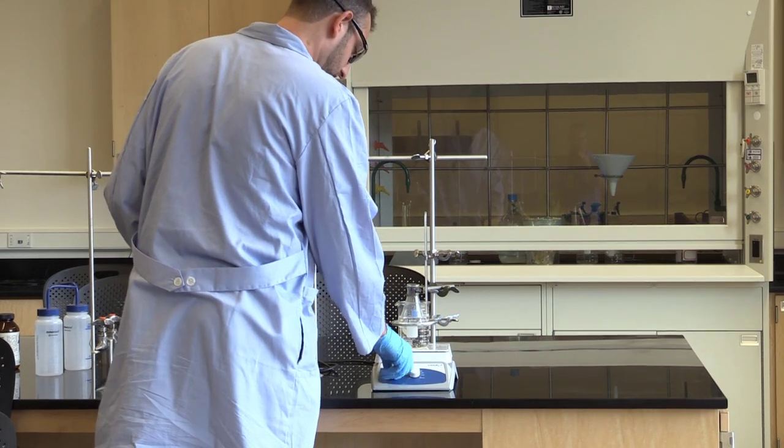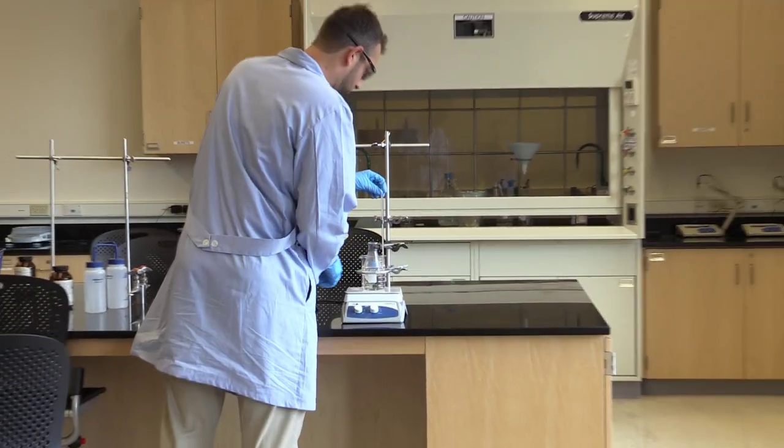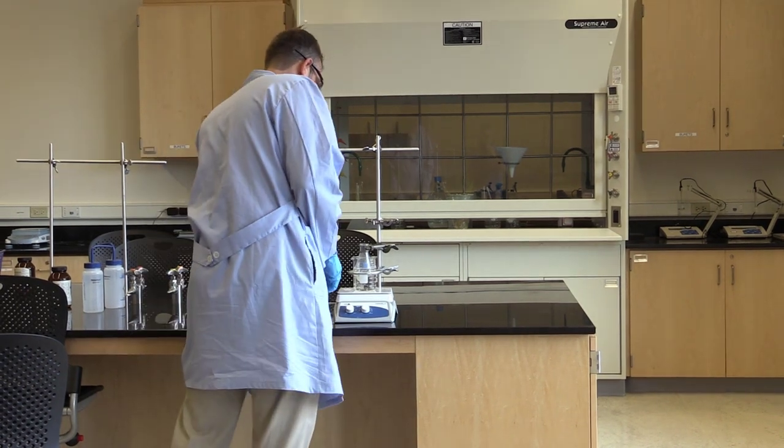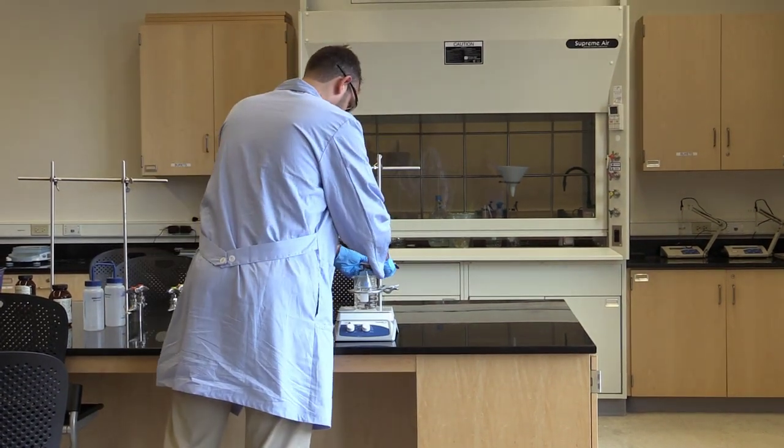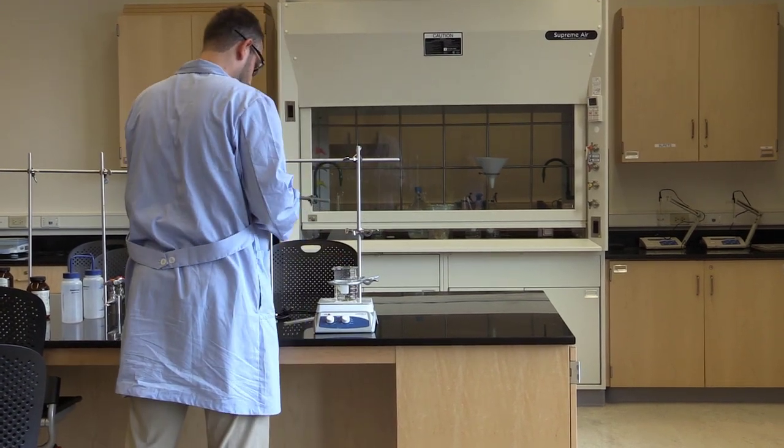The first thing we'll do is turn off the heat and unplug the hot plate. Next, we'll remove the thermometer so we don't break it as we take out our sample.